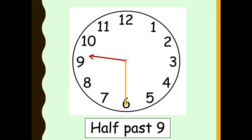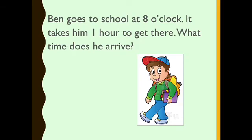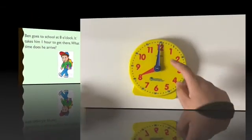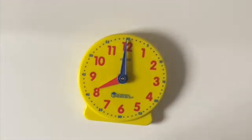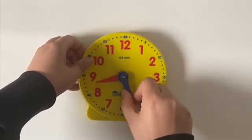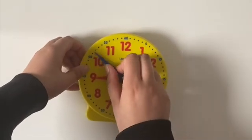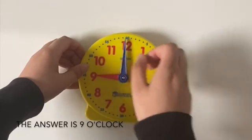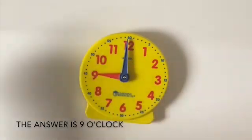Now we're going to have a look at some questions. Ben goes to school at 8 o'clock and it takes him 1 hour to get there — what time does he arrive? The big hand is pointing at 12 and the small hand is pointing at 8, so that is 8 o'clock. Now all I have to do is go all the way round again until I reach o'clock. 1 hour is 60 minutes, so my new time is 9 o'clock.